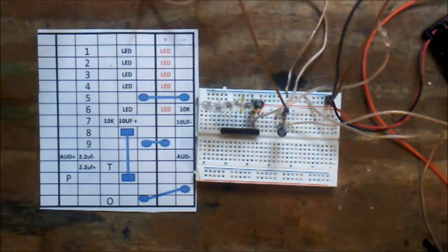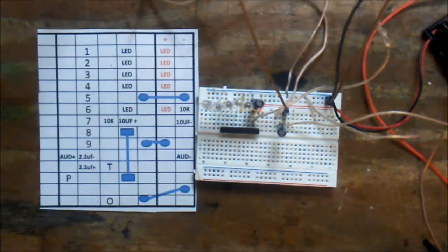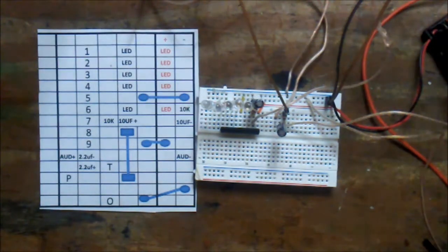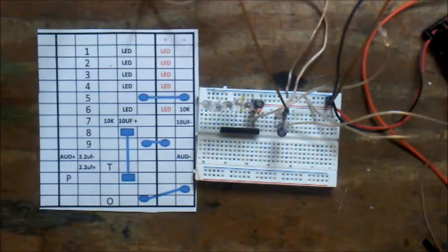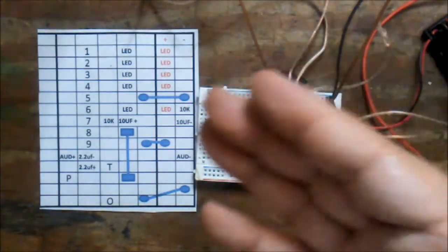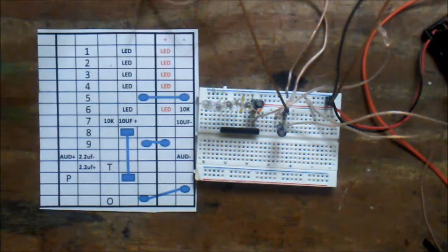What I have before you is a VU meter with an AN688 chip. What a VU meter does is it takes the sound, and then depending on the decibels of the sound, it lights up the LEDs. The higher the sound, the more LEDs. The lower the sound, the less LEDs.